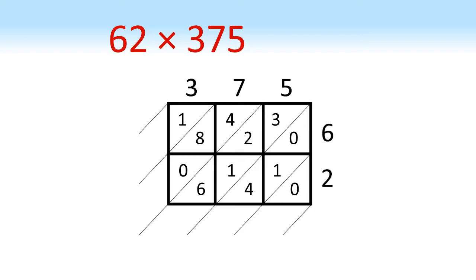Now we've filled in the grid, we are going to look at each of our diagonal strips. In the bottom right, the first strip has only got a 0 in it, so at the bottom we put 0. The next strip along has got a 0, a 1, and a 4 which we add together to give 5.